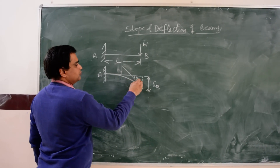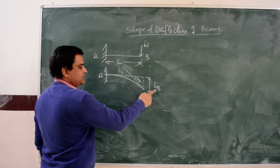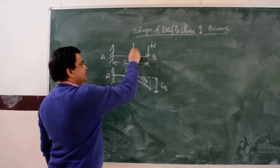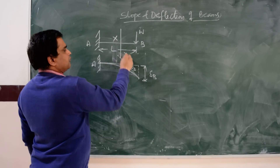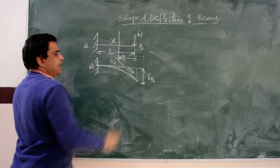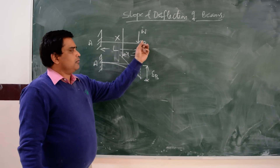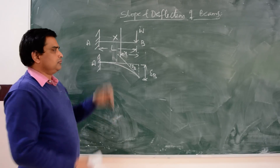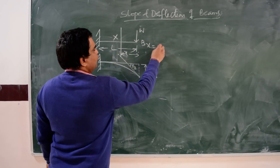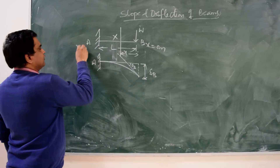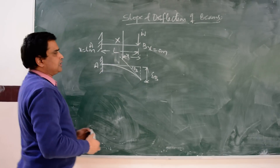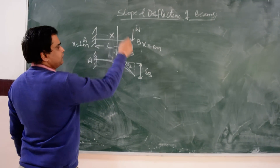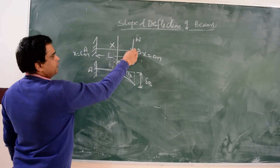The maximum slope and maximum deflection occur at the free end. Now take a section at distance x from the free support. This x varies from point B to point A — at B, x equals 0 meters, and at A, x equals L meters. So x varies from 0 to L meters.